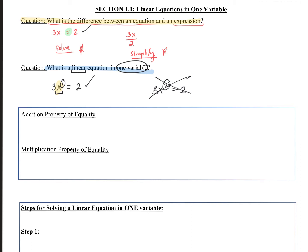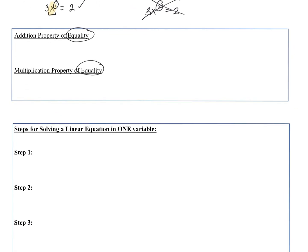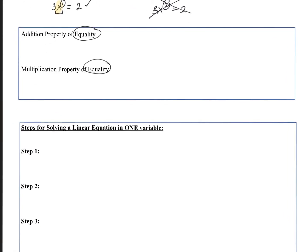Let's look at some properties we use for equations — we can use these in equations but not with expressions. The addition property of equality: if we have an equation, say x equals y, we can add something to either side. As long as we add the same thing to both sides, our equation remains balanced. We can also use this for subtracting the same thing from either side.